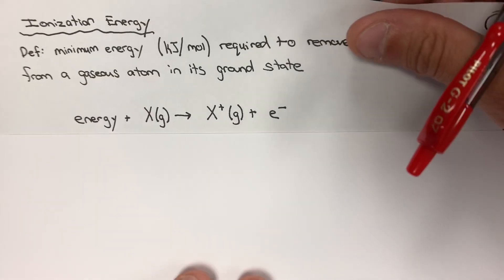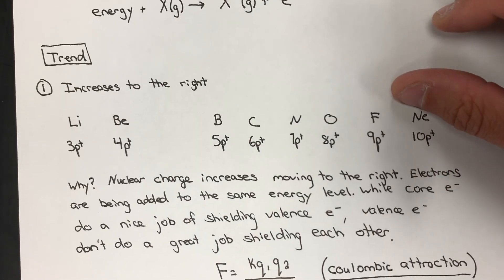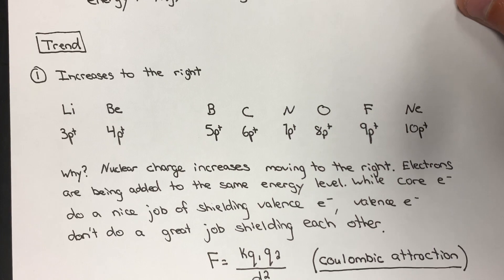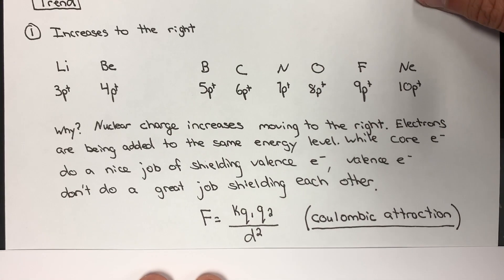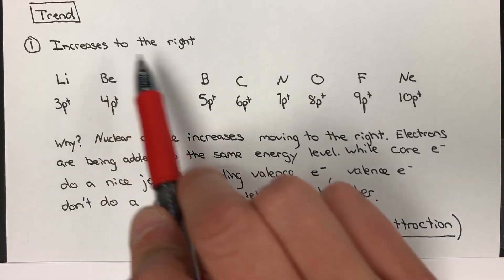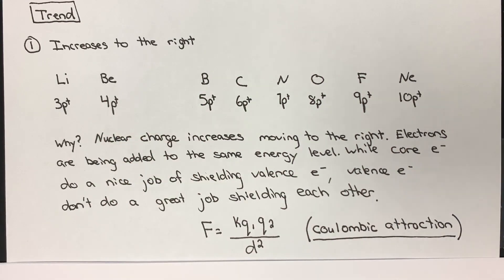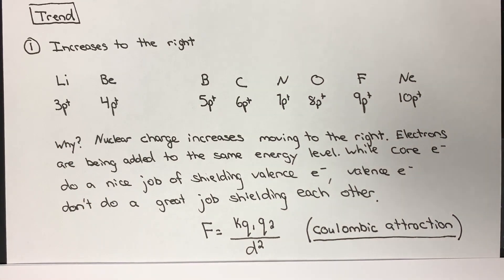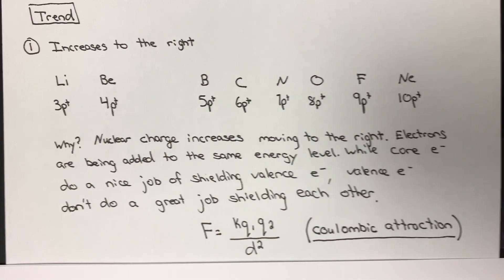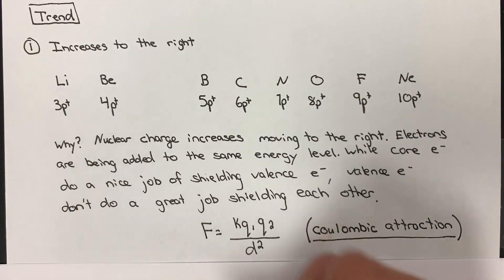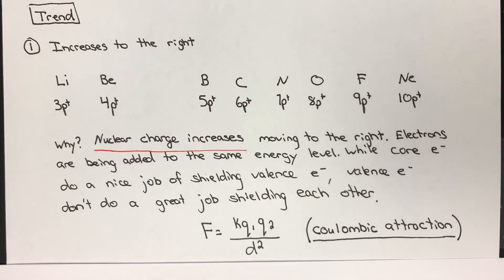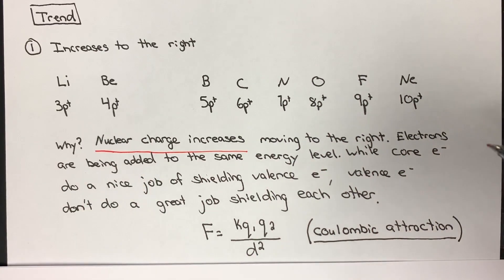Let's jump into trends. As we move to the right on the periodic table, ionization energy increases. What I have here is the second period, lithium all the way through neon, with the atomic numbers — the nuclear charges — written out. As we progress from left to right, nuclear charge is increasing, so that positive attractive pull of the nucleus is really bearing down on the electrons in the electron cloud.